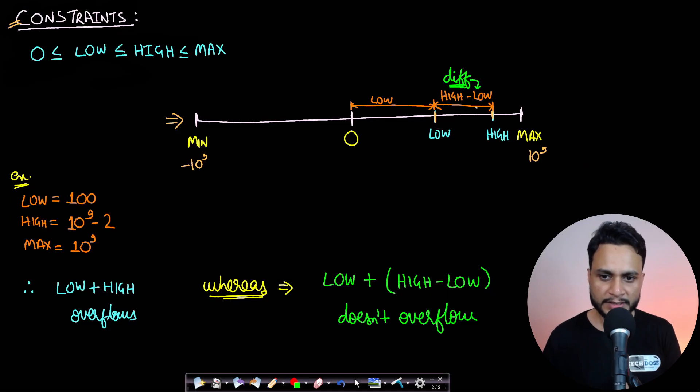By taking an example visually you will see it is going to overflow if I add this low value to the high value. This entire thing from zero to this point is high and from zero to this point is low, so if you add them together it will definitely go beyond the max point.